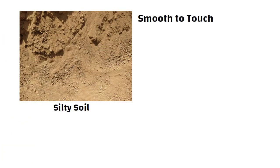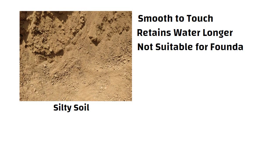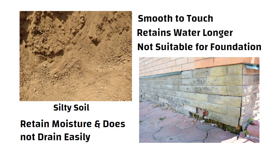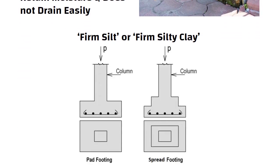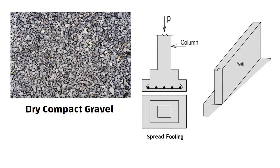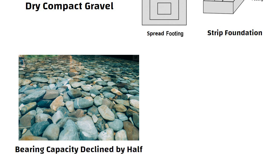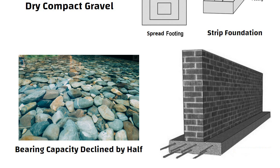Silty soil can be smooth to touch and retains water longer because of its smaller particles. It is generally not suitable for foundation structures because of its expansion, which exerts pressure against the foundation and damages it. The silt retains moisture and does not drain water easily. If firm silt or firm silty clay deposit extending to a great depth is available, then RCC spread and isolated pad footings are appropriate. In case of dry compact gravel, spread and strip foundations can be used. If gravel is submerged in water, the bearing capacity is declined by half, and a shallow RCC wide strip foundation can be used.